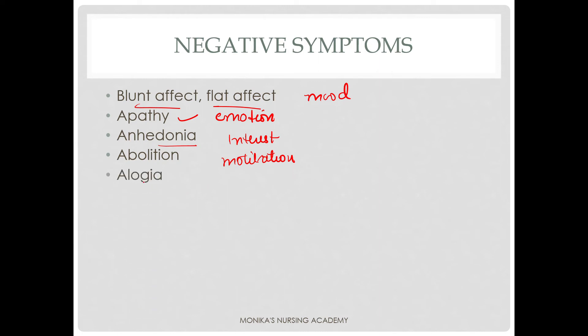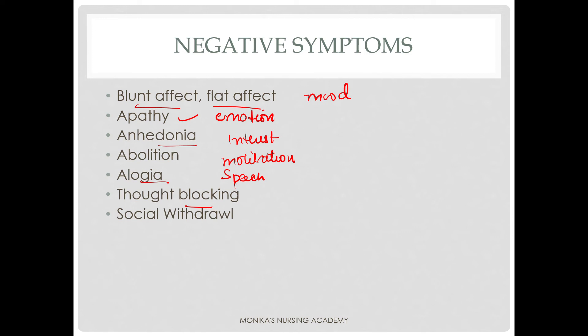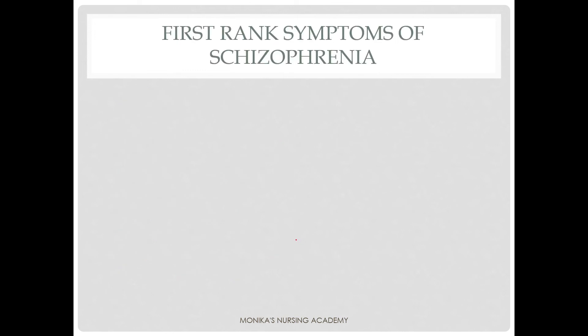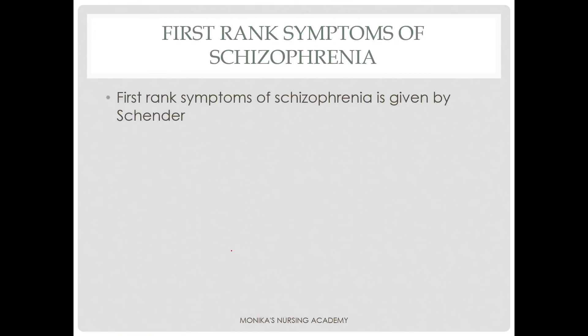Alogia means lack of speech — it is related to speech and the patient is not able to speak properly. Thought blocking means the patient feels their thoughts are being blocked. Social withdrawal means the patient withdraws themselves from society and all social activities, shows no interest in anything, does not participate in anything, feels helpless, and suicidal tendencies are also seen in the patient.